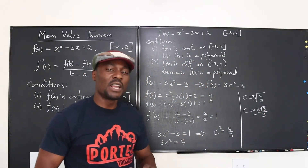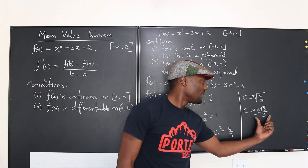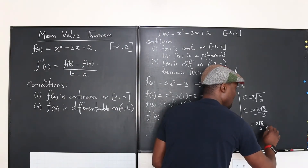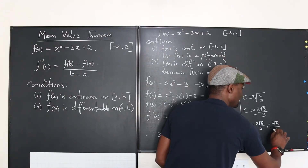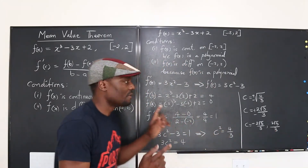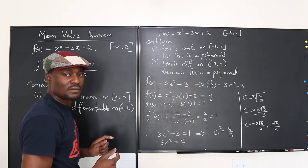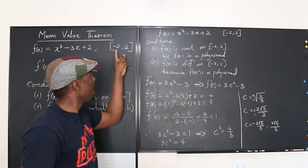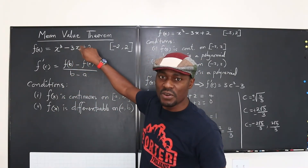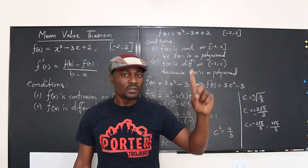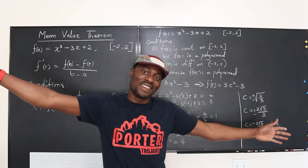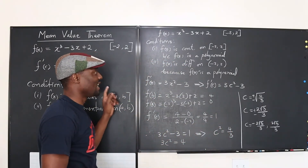The two values we got are c equals negative 2 root 3 over 3 and c equals positive 2 root 3 over 3. The question to ask is: are these two numbers within the interval? The answer is yes — this number is greater than negative 2 and this number is less than 2, so both are within the boundaries. This confirms the mean value theorem: there is always at least one tangent on the curve within the interval that has the same slope as the average slope — the slope of the secant line.